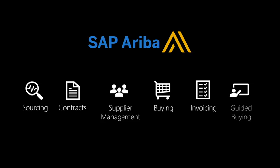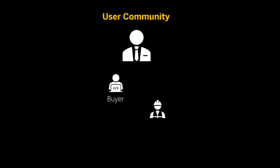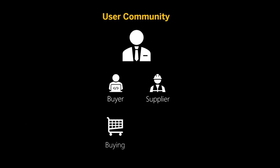In our upcoming training program we are going to focus on the purchase to pay processes executed in Ariba. Ariba consists of different components. The first one is the user community. This community consists of buyers and suppliers operating in the Ariba environment. A buyer is someone who does the purchasing to fulfill the business needs. A supplier is someone who provides goods and services that are purchased by the buyer.